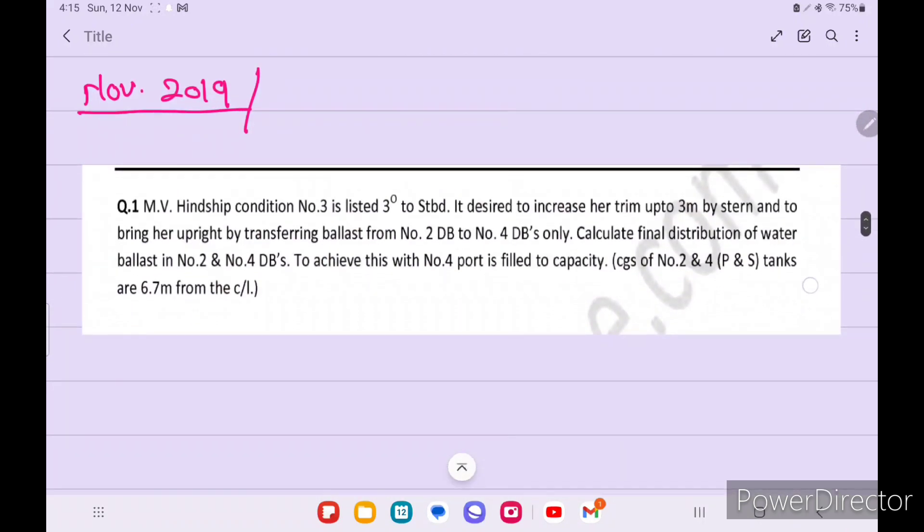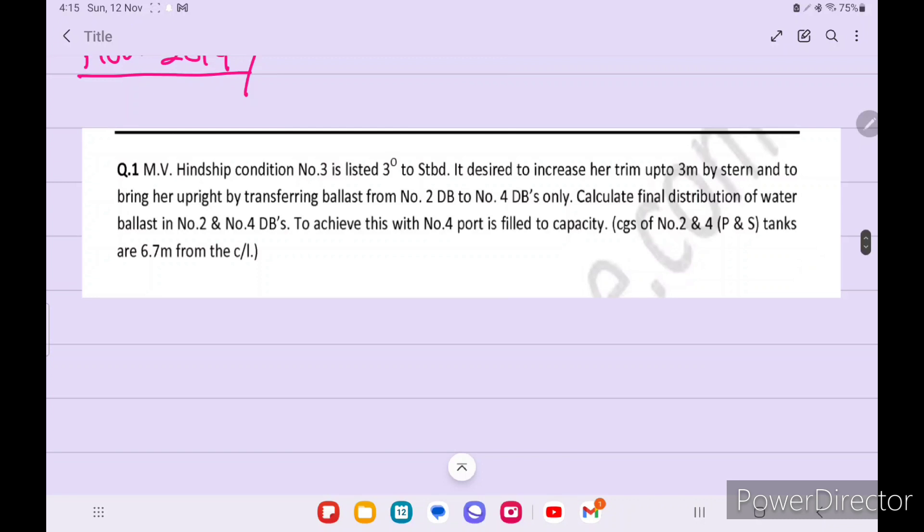So question is, MV Hindship Condition No. 3 is listed 3 degrees to starboard. It is desired to increase her trim up to 3m by stern and to bring her upright by transferring ballast from No. 2 dB to No. 4 dBs only.